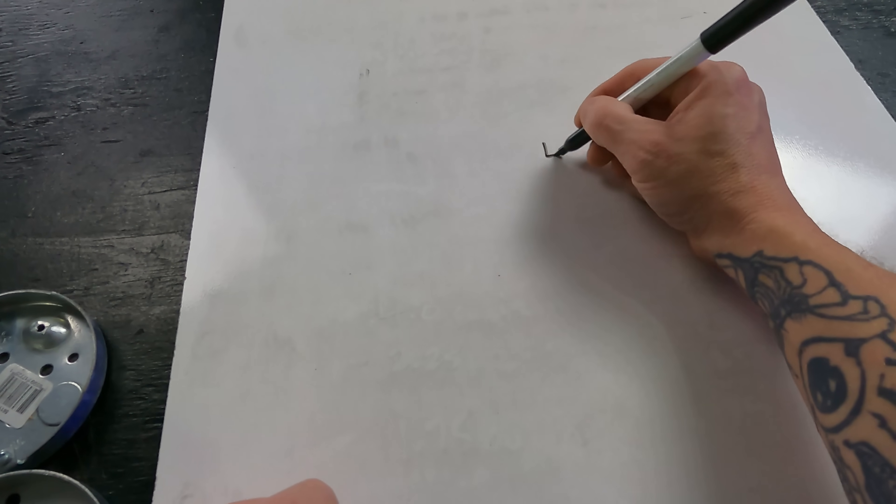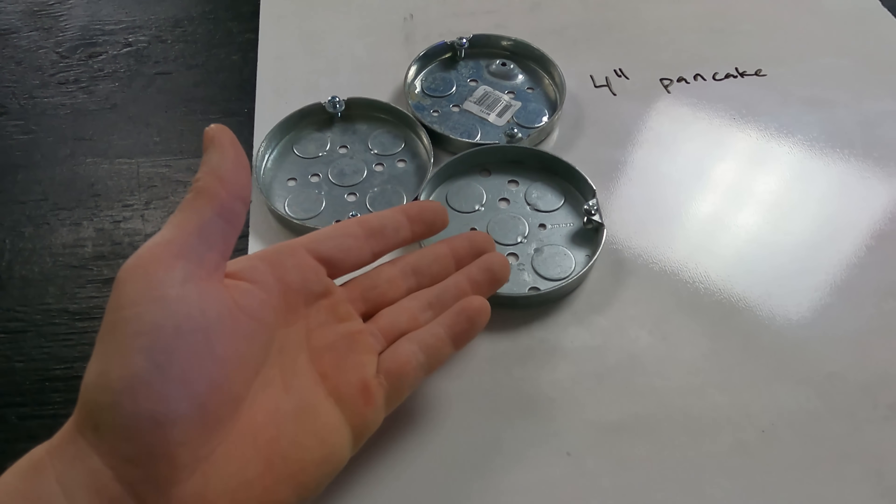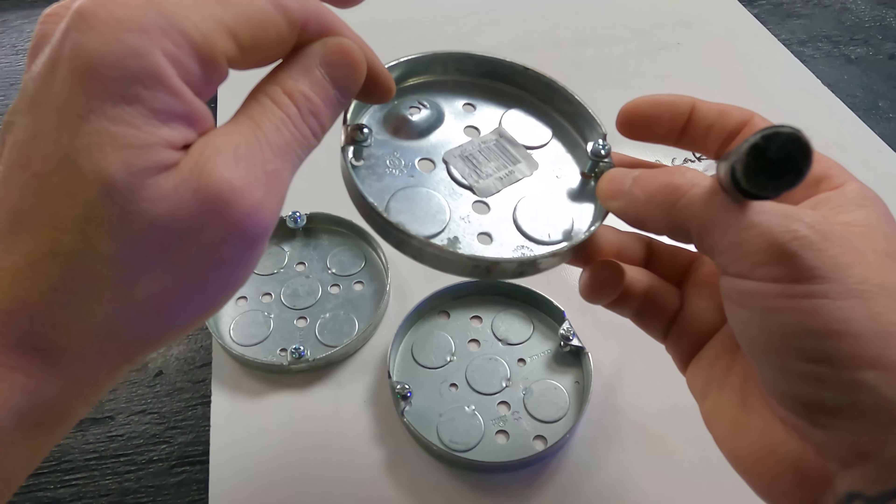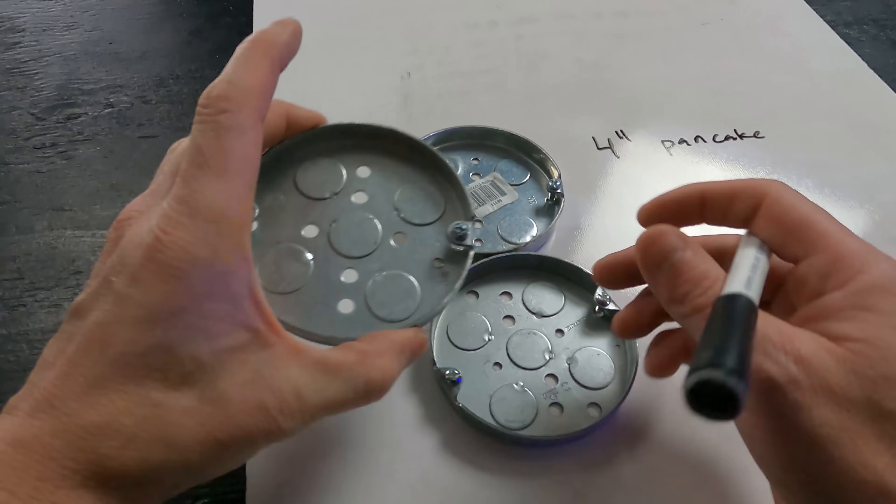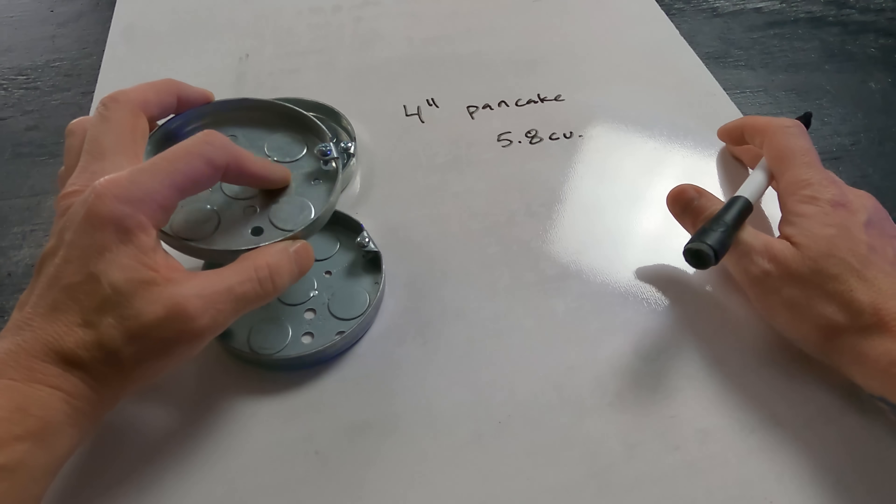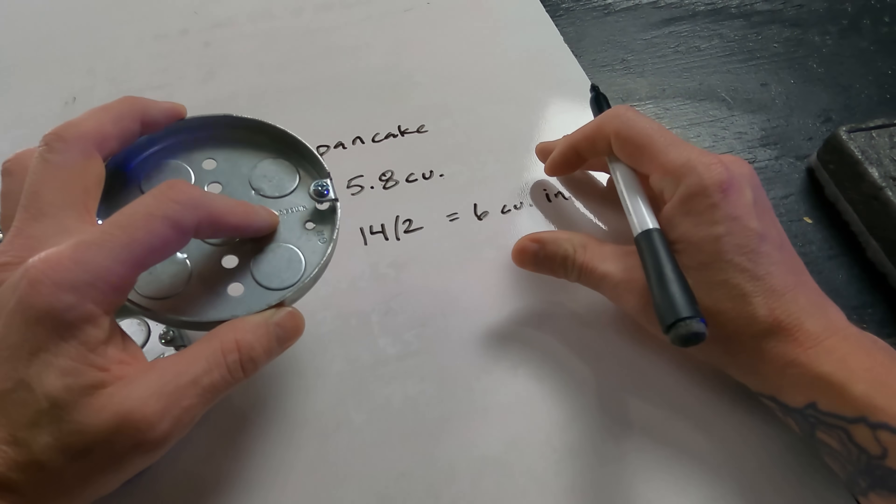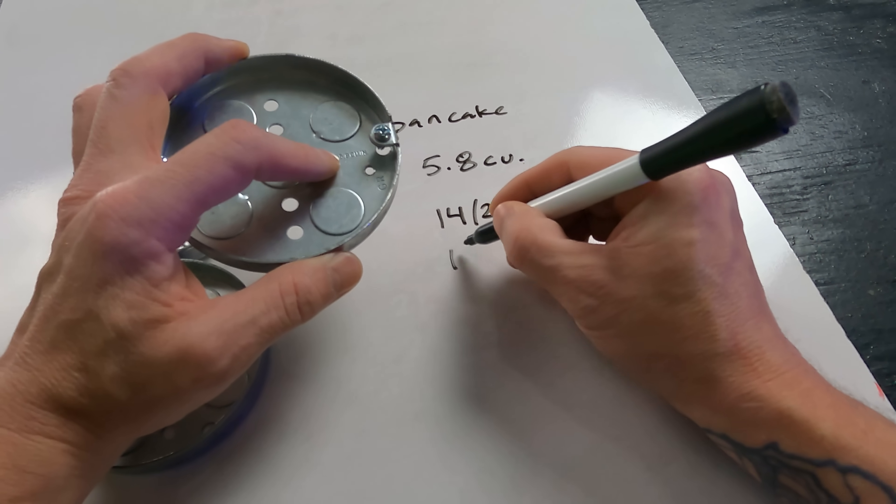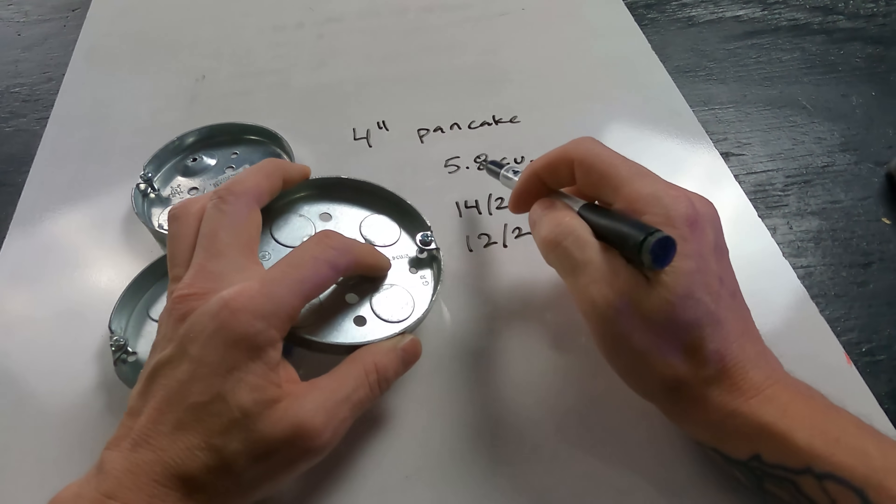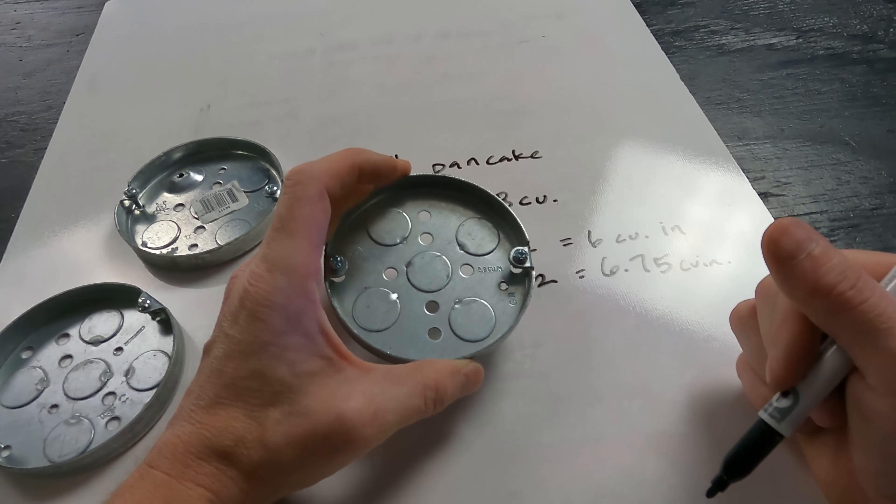Now let's do an example of a four-inch pancake. I've got three variations of a four-inch pancake here. They all look pretty similar. We've got one here that says it is 5.8 cubic inches. Before we even go any further, we know from our example with the 14-2 that we were at six cubic inches for all three of those number 14 conductors. If we do the 12-2 we're at 6.75 cubic inches. So already we can see that neither the 12-2 or the 14-2 is within code even for this 5.8 cubic inch pancake.